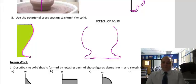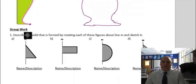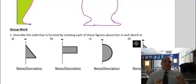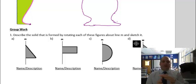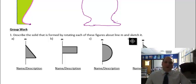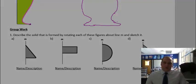It rotates around and is going to create that shape — it's kind of like a vase. So now we're going to be doing these in class tomorrow, and it shouldn't take you that long. It's pretty simple: the rectangle creates the cylinder, the triangle creates the cone, a half circle is going to create a sphere — stuff like that. We will practice these in class tomorrow.